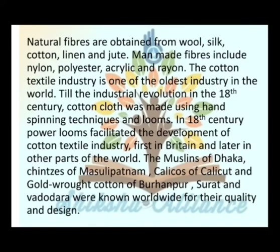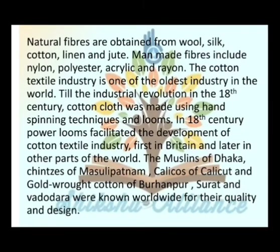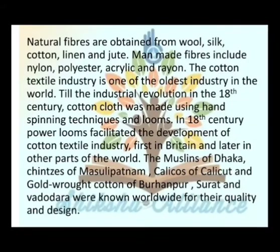The cotton textile industry is one of the oldest industries in the world. Till the industrial revolution in the 18th century, cotton cloth was made using hand-spinning techniques and looms. In the 18th century, power looms facilitated the development of the cotton textile industry, first in Britain and later in other parts of the world. The muslins of Dhaka, chintzes of Masulipatnam, calicos of Calicut, and gold-rot cotton of Burhanpur, Surat, and Vadodara were renowned worldwide for their quality and design.